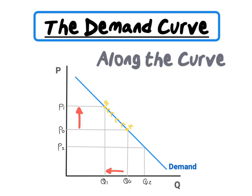But what about a decrease in price? Let's decrease price from P0 to P2. A decrease in price is illustrated as a downward movement along our demand curve. We therefore move from point A to point C. Our new price is P2, and quantity will increase from Q0 to Q2.